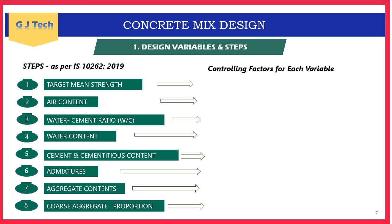Let us understand step 1: design variables. There are eight design variables. The first is target mean strength. The controlling factors are the grade of concrete — the 28-day expected compressive strength should be equal to or higher than the design grade. For example, M25 concrete should achieve strength of at least 25 MPa after 28 days.